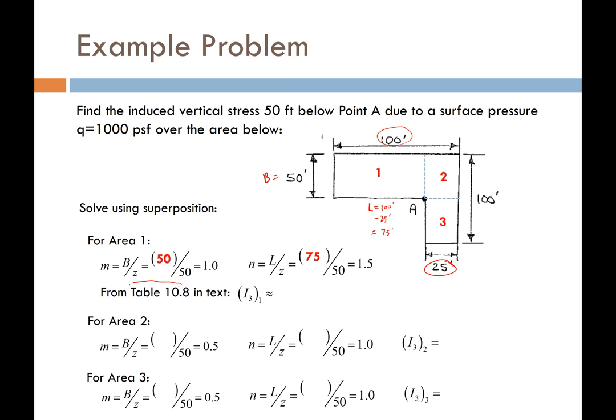From the chart or from table 10.8 in the text, the precise value is 0.1935 for rectangle 1's influence factor — very close to our graphical estimate.